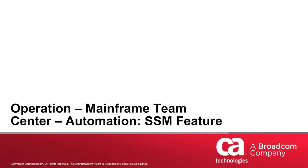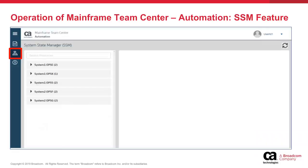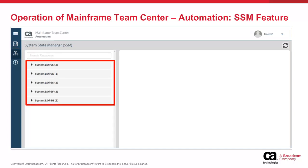This section briefly covers the operation of Mainframe Team Center Automation SSM feature. Here we are presented with an active Mainframe Team Center Automation user session at the System State Manager or SSM page. You navigate to the SSM page by clicking on the SSM icon in the blue navigation bar on the left. On the SSM page, you are presented with an accordion listing the systems and Ops MVS subsystems participating in Mainframe Team Center Automation. Here we can see that there are two systems participating, System 1 and System 2.